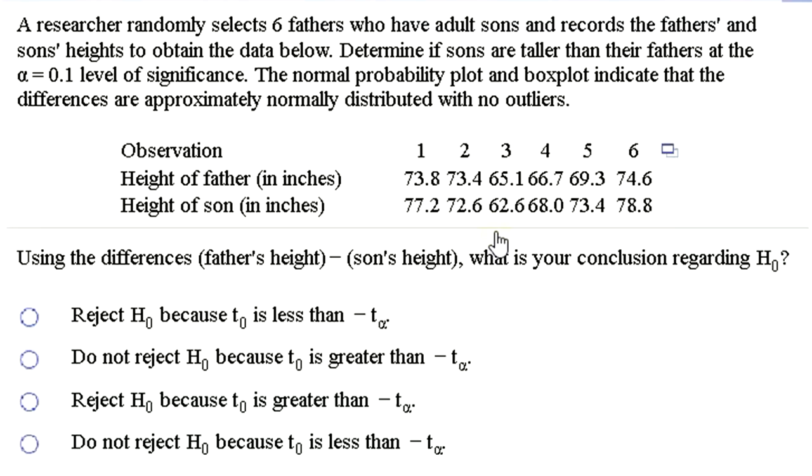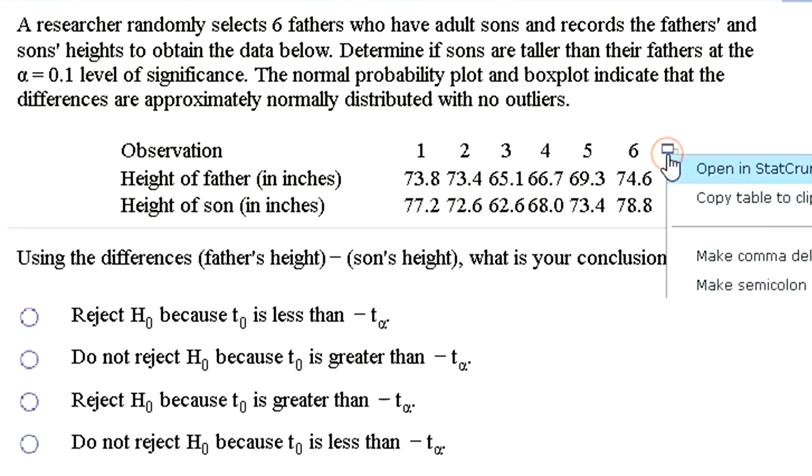All right, great. We have some data now. A researcher randomly selects six fathers who have adult sons and record the father's and son's height to obtain the data below. Determine if the sons are taller than their fathers at an alpha 0.1 level of significance. We're assuming normality assumptions are satisfied. So let's just open this data in StatCrunch.